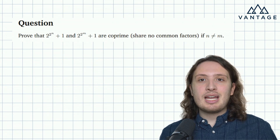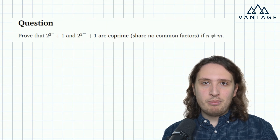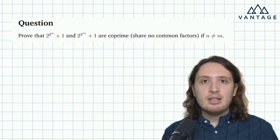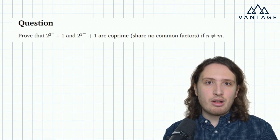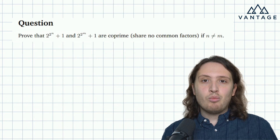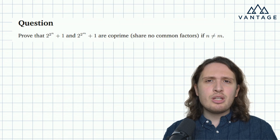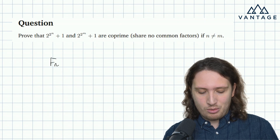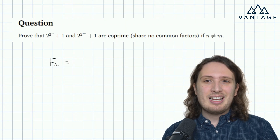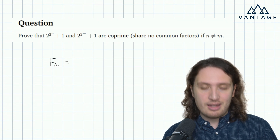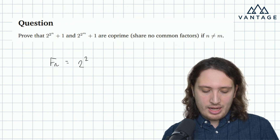The first thing I would say is clearly the two numbers are of the same form, except that one uses an n and one uses an m. So we might as well give them a name — think of these as terms in some sequence, one being the nth term, one being the mth term. It should be useful to have that notation. Since these are called Fermat numbers, I'm going to call the sequence fn — f for Fermat — but you don't need to do that; you could use a or x or whatever you like. So let's define fn as 2 to the 2 to the n plus 1.